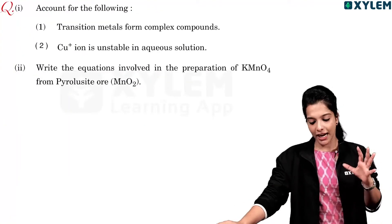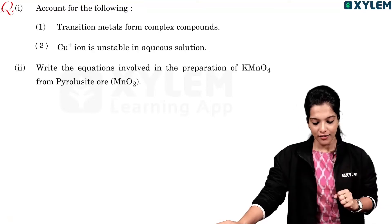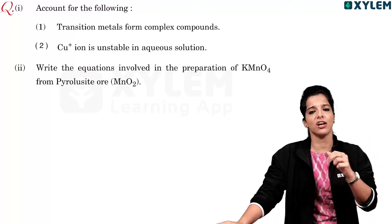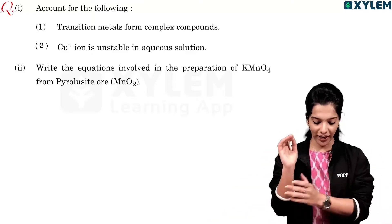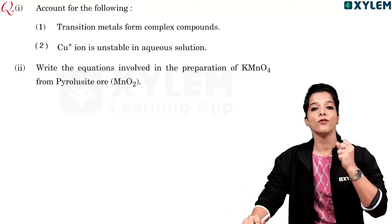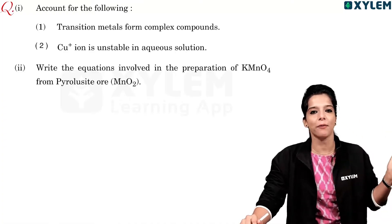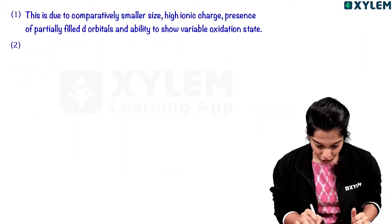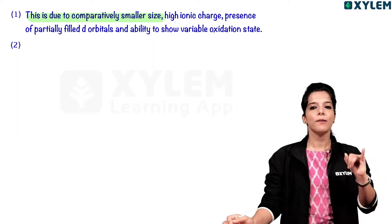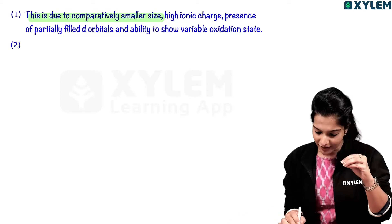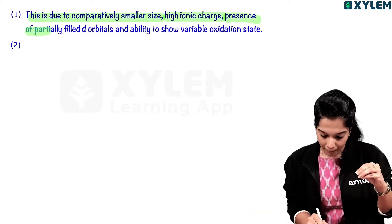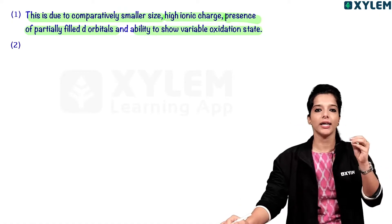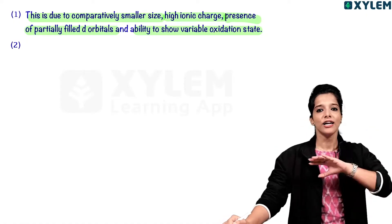Account for the following: transition metals form complex compounds. Due to comparatively smaller size of D block elements, high ionic charge, presence of partially filled D orbitals, and ability to show variable oxidation state — these four points explain why D block elements form complex compounds.